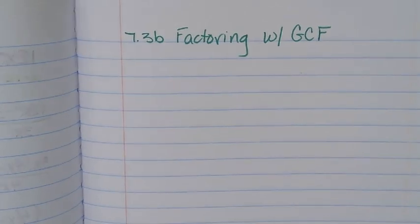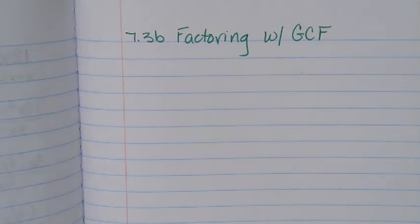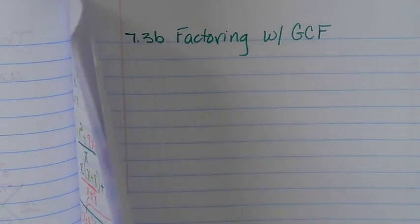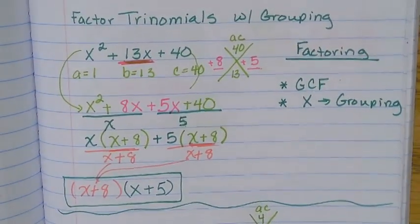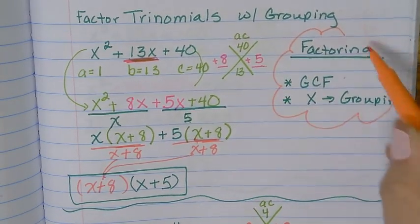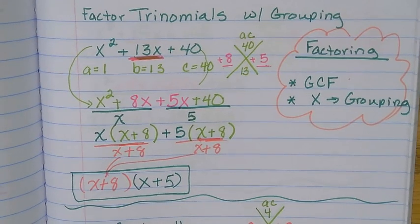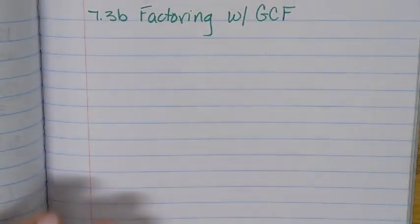So yesterday we factored trinomials where our first term was greater than one. Today we're going to take that up just a notch. If you go back to when we first started factoring trinomials with grouping, we said that the first thing you need to do is check for a GCF. The problems that we've done so far, if we've checked, they don't have that. The problems we're going to do today do have a GCF, or a greatest common factor that we need to take out first.